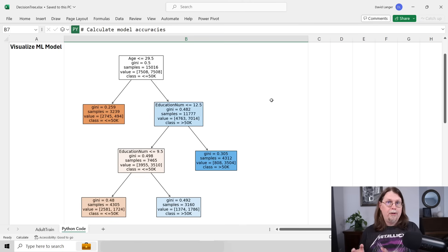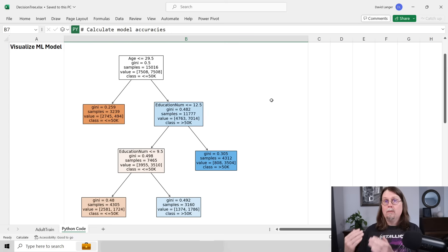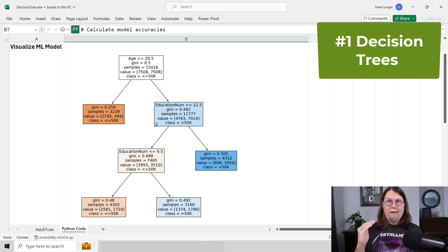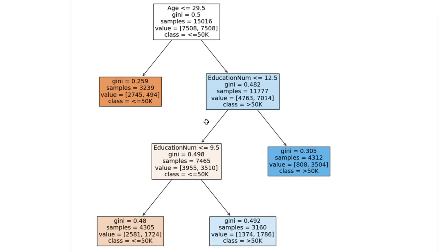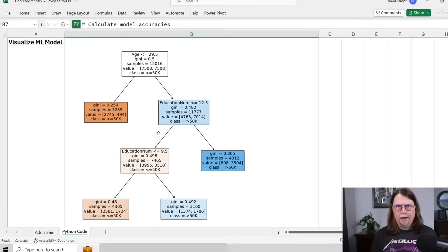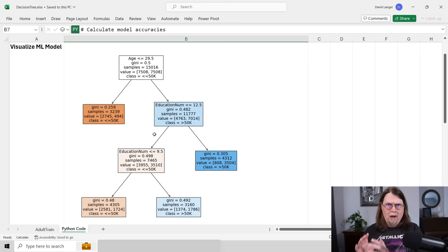Let's jump into the list. First up, we're popping into Excel to talk about decision trees. I've run Python in Excel code and created a decision tree predictive machine learning model. This is the very first place you should start on your machine learning journey with Python and Excel. You could literally put a decision tree in a PowerPoint slide, show it to business stakeholders, and they would understand what's going on — decision trees are awesome for interpretability.